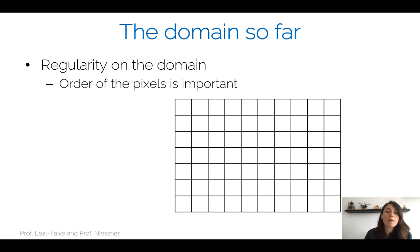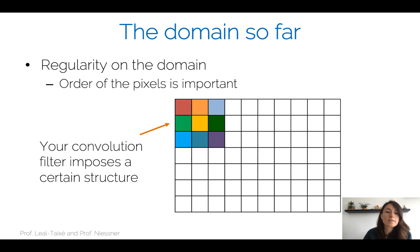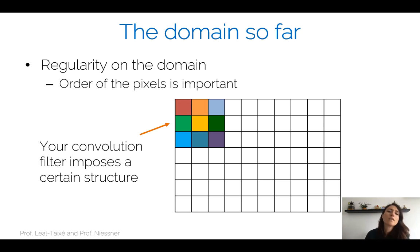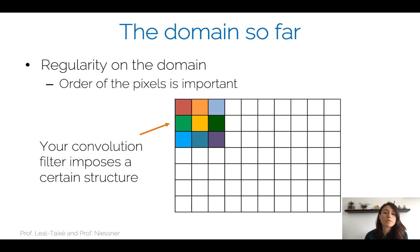Why am I mentioning this? When we actually try to apply convolutions on top of an image — when we want to train a convolutional neural network — what we do with each convolution filter is slide it through the image. This convolution filter has a certain shape and therefore imposes a certain structure. The relationship of the weights is always the same, and we can do this because our image domain is actually regular.